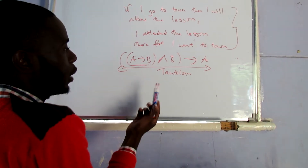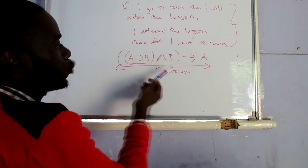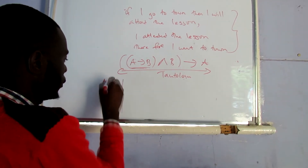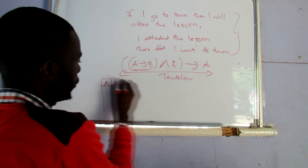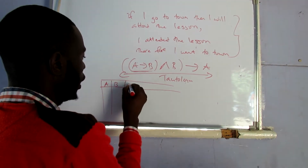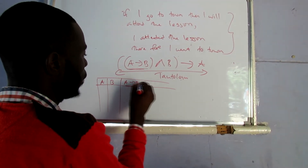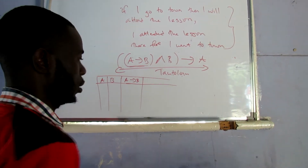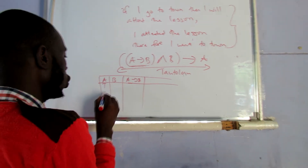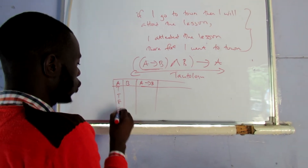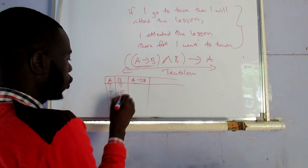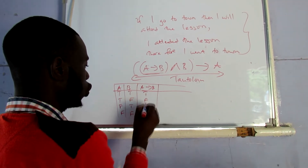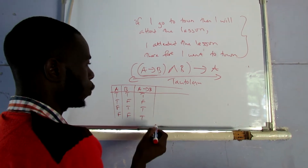How many variables do we have here? I have two variables: A and B. So first we have columns A, B, then A implies B - which is this part - B, and A we have already. The values for A are: T, T, F, F. And for B: T, F, T, F. Then for A implies B: F, T, T, T.